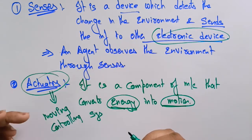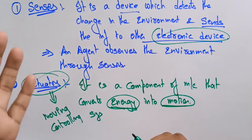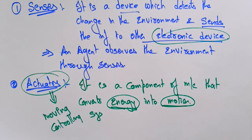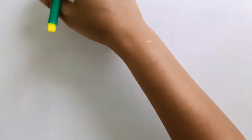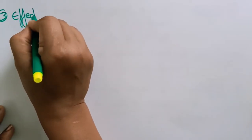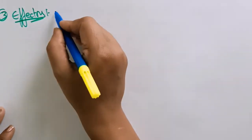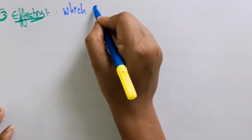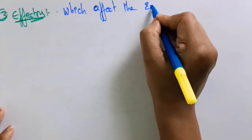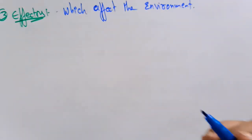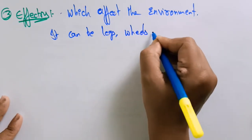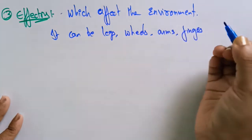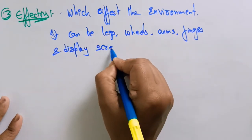Remember: in artificial intelligence, everything is based on sensors and activators — these are responsible for moving and controlling the system. An activator can be an electric motor, gears, rails, etc. The next term is effectors. Effectors are devices which affect the environment — they can be legs, wheels, arms, fingers, wings, or even display screens.